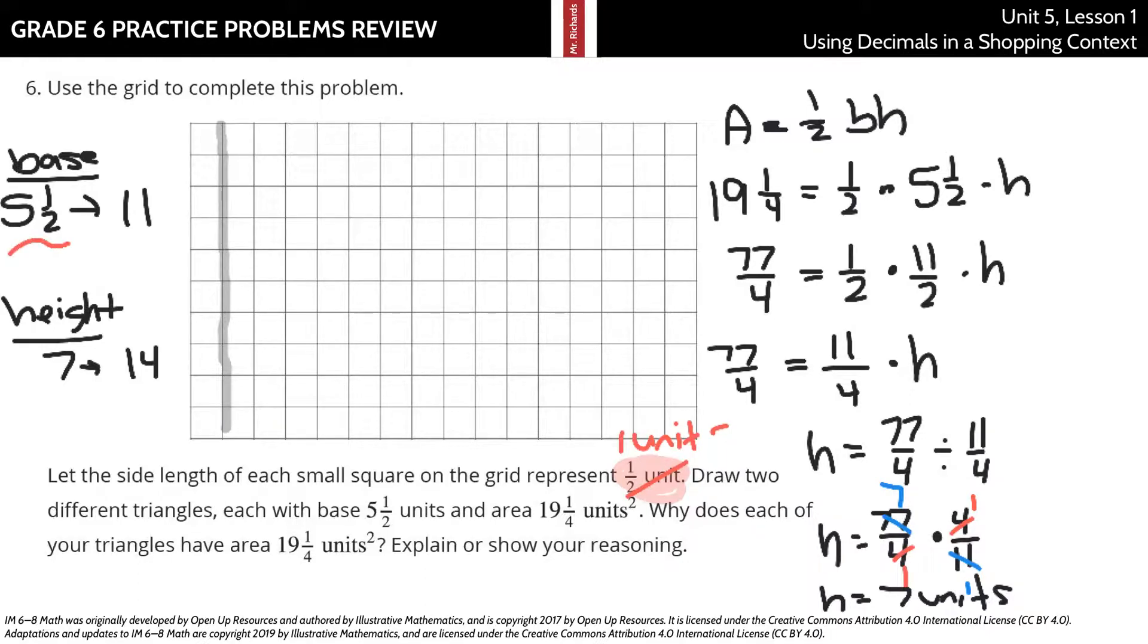And so we're going to go back to this 5 and a half and 7 idea. The grid provided isn't big enough. And so if I start then with the base of 5 and a half, 1, 2, 3, 4, 5 and a half, I can then have a height of 7 and I can go straight up for that if I wanted 1, 2, 3, 4, 5, 6, 7 and then I can connect this because here is my height of 7 and a base of 5 and a half.